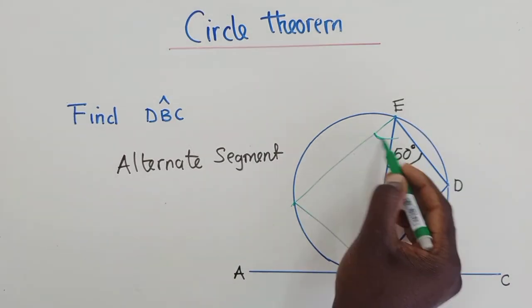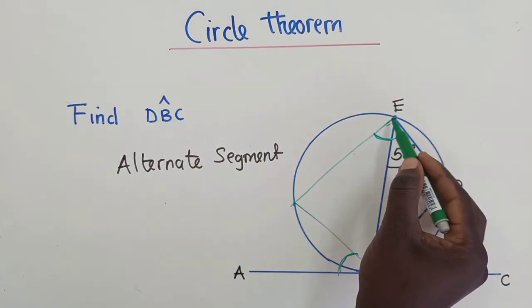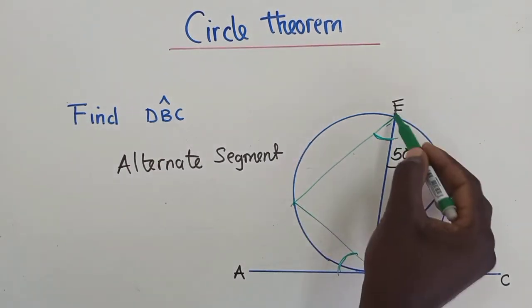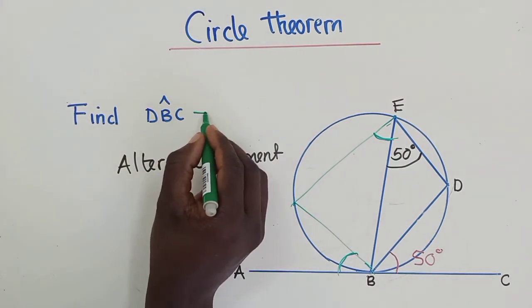So the angle between one of the chords which is closer to the tangent line is equal to this angle up here, which is between the other chord and the line that is joining the two chords. Okay, so this is a property you need to definitely know. So the answer here will just be 50 degrees.